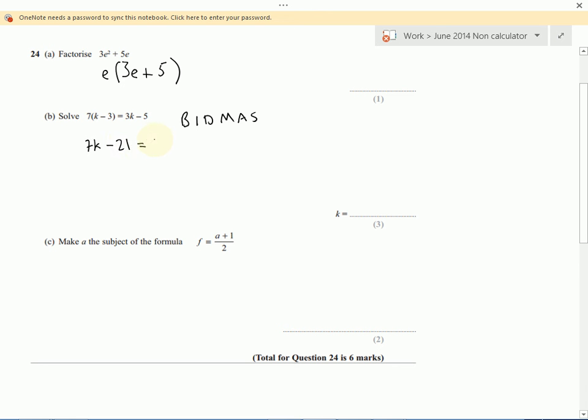And on the right side of the equals, we've got 3k minus 5. So I want all the k's on one side and all the numbers on the other side. So let's try and get all the k's on this side. I want to get rid of this 3k. So to this side of the equation, I'm going to minus 3k. So I've got 3k minus 3k is no k. So I'm going to have minus 5 on here, just on its own. But if I take away 3k from one side of the equals, I have to take away 3k from the other side of the equals. So that will be 7k minus 3k. 7 minus 3 is 4. So 4k minus 21 equals minus 5. It's made it a bit simpler.